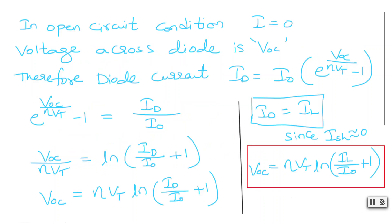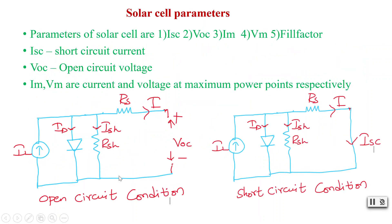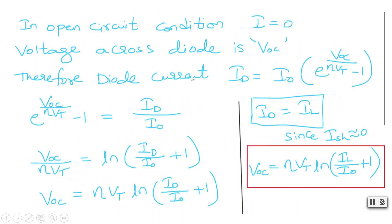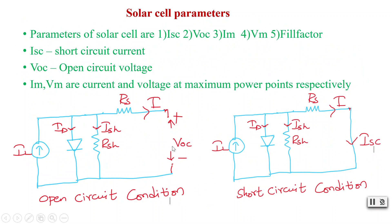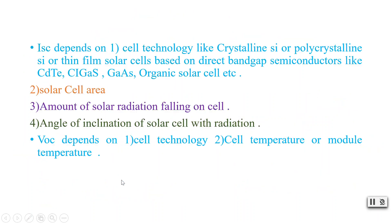In open circuit condition, I is zero because these terminals are open. The voltage across the diode is Voc. The voltage at the two terminals is Voc, and since the current is zero there is no voltage drop across the series resistor Rs. Therefore the same Voc appears across Rsh and across the diode, as these are connected in parallel.